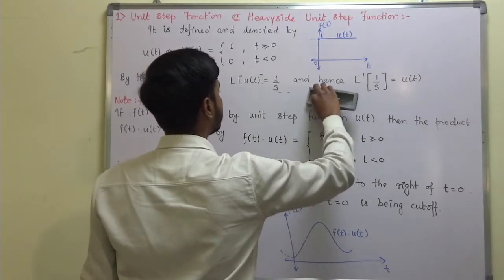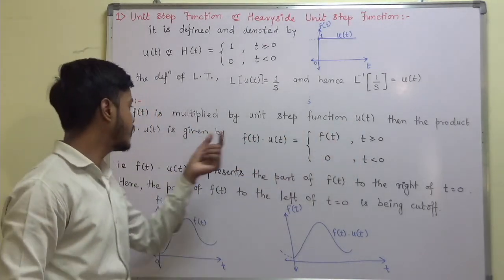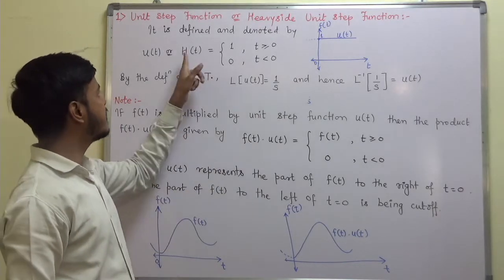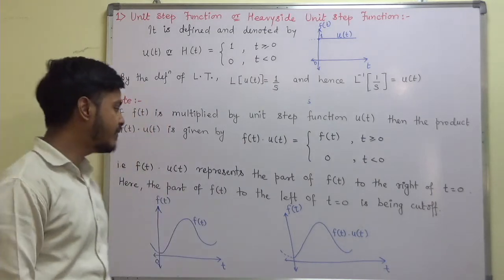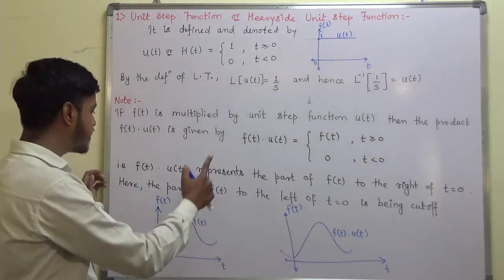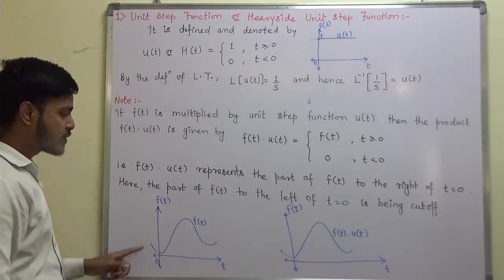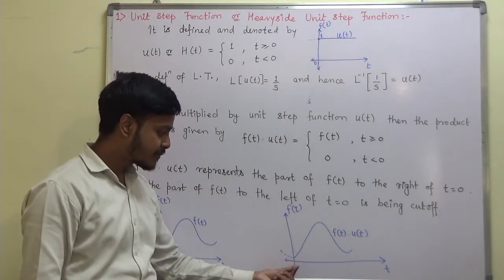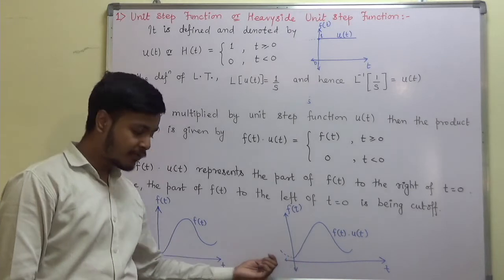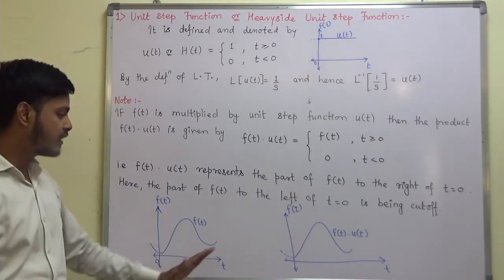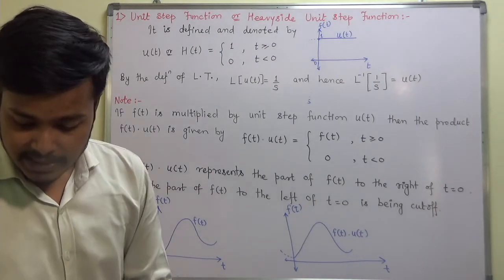Now suppose you have a function f(t). If we multiply f(t) by the unit step function u(t), then the product f(t)·u(t) equals f(t) for t greater than or equal to 0, and 0 for t less than 0. Graphically, this product represents only the part of f(t) to the right of t = 0 — the part of the curve to the left of t = 0 is cut off, as you can see from the graphs.